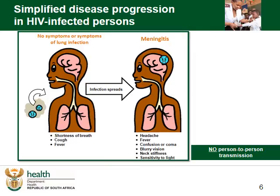The majority of patients with a cryptococcal antigen in the blood will progress to disseminated disease — it's just a matter of time — with the most common presentation being cryptococcal meningitis.